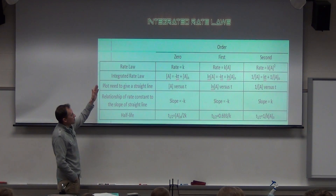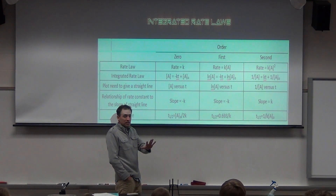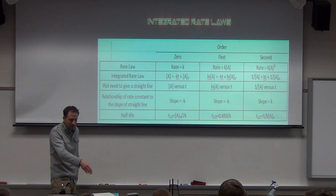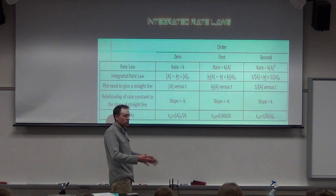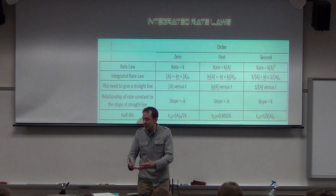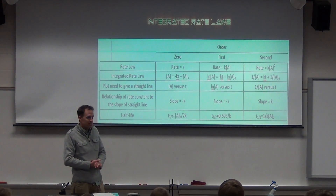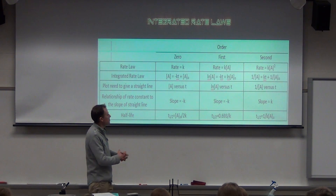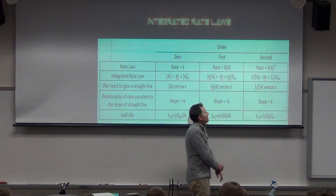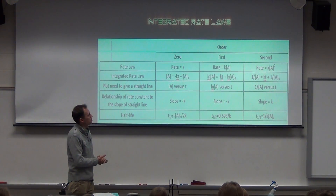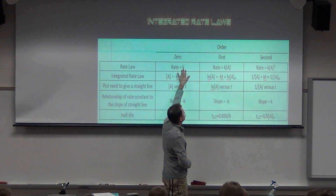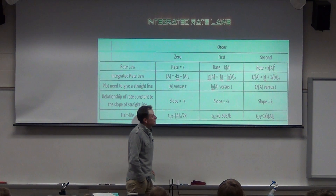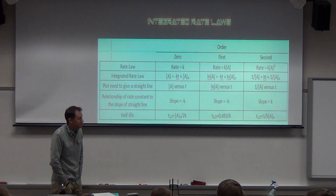Note the top one first — a differentiated rate law shows how the rate depends on concentrations. Rate equals k for zero order, k[A] for first order, and k[A]² for second order. If you double the concentration, what happens to the rate? If you quadruple it, what happens? That's the differentiated. An integrated rate law depends on time — it shows how concentration depends on time. All of these have time t in them. For zero order it's just concentration, for first order it's natural log of concentration, and for second order it's one over concentration — that's what you have to brute-force memorize.